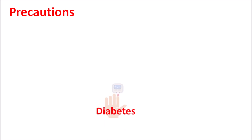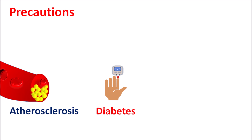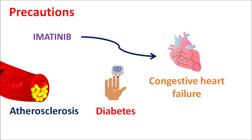People with coexisting disorders like diabetes or elevated cholesterol levels, which may lead to atherosclerosis, require caution. If any of these coexisting disorders are present, imatinib should be carefully given as it may increase the risk of cardiovascular complications, resulting in congestive heart failure or left ventricular dysfunction. Drugs that increase cardiac risk should also be carefully combined with imatinib to avoid fatal cardiac effects.